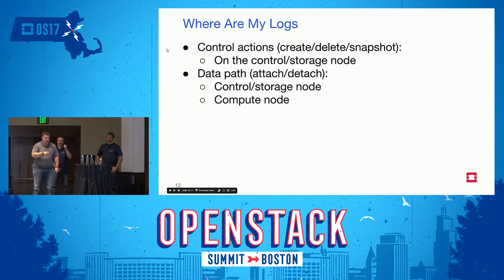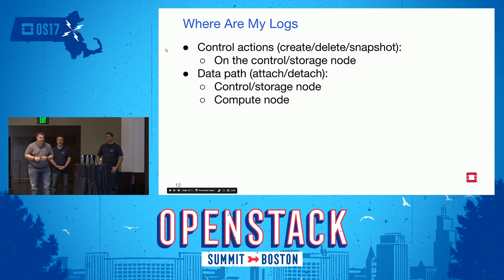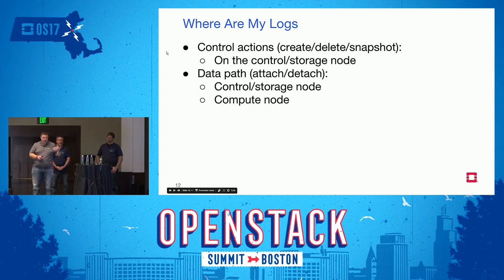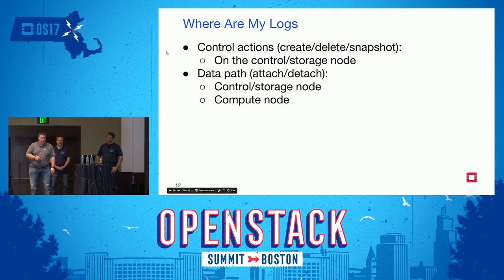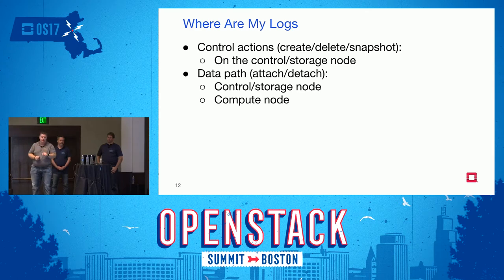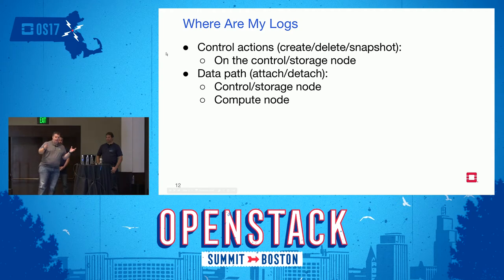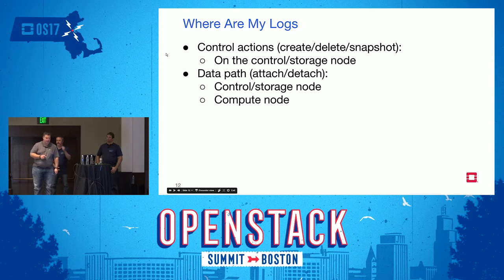Where you look for logs depends on where in the process you hit a problem. For control actions — create, delete, create snapshot — it's going to come out of your volume driver service, probably on your control node. Once Nova has asked Cinder for information, you'd check logs on the control node. For data path problems — if the backend set up the target but it's not reaching the compute node — you need to look on the compute node, because that's where the work is actually happening.